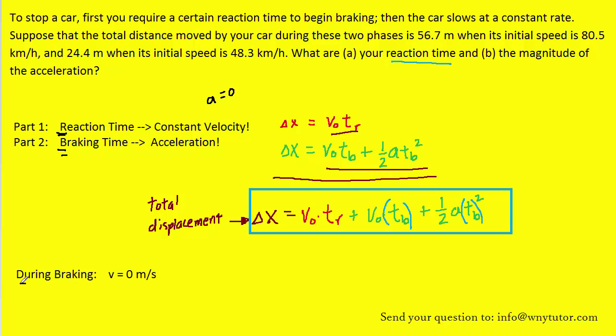During part two of this motion, when the car is braking, we know that the final velocity is going to be zero meters per second because the car is being brought to rest. Let's consider this equation from kinematics. Because we are braking during this part of the motion, we're using T sub B, which is the braking time. As just noted, the final velocity right here will be zero, so we can substitute that in. What we can then do is solve this equation for T sub B.